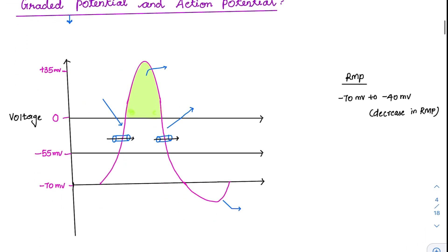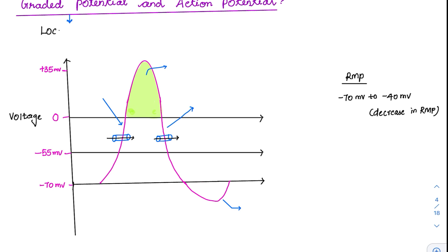Now we come to graded potential and action potential. What is graded potential and what is action potential? All of us know that the action potential is the one which is transmitted along the axon. But for an action potential to be generated, there has to be some other potential which has to be created first — that is the graded potential, also called the local potential.